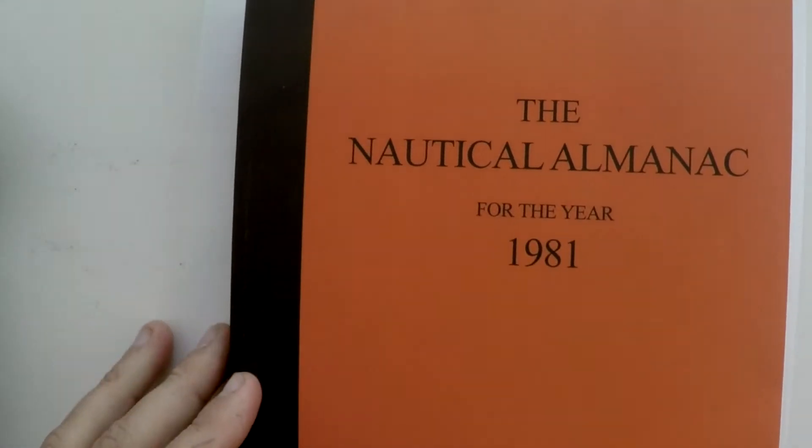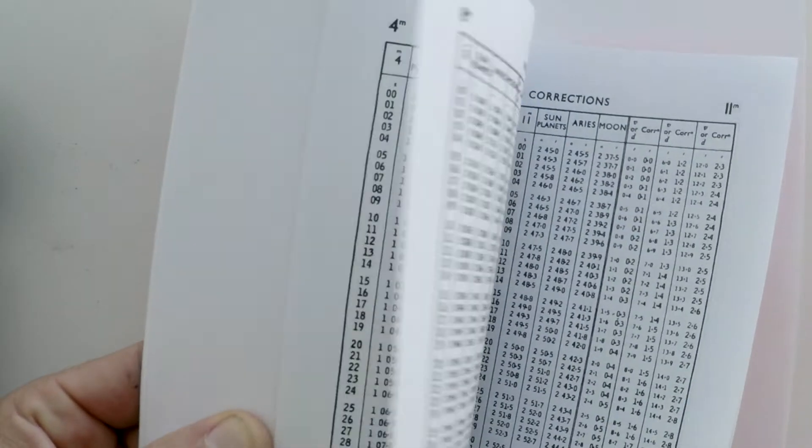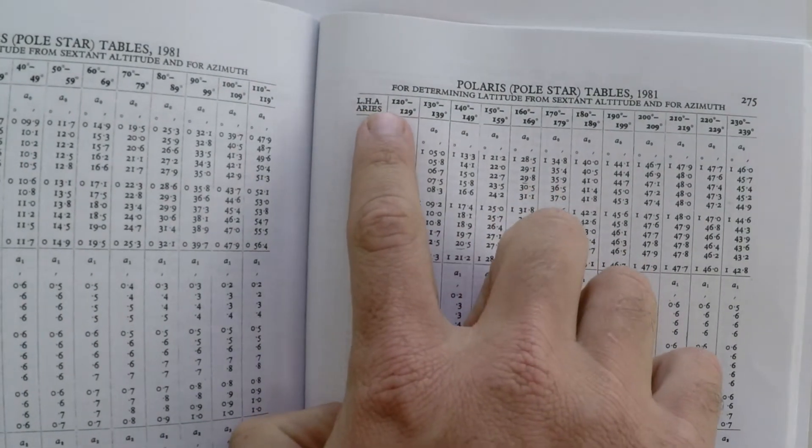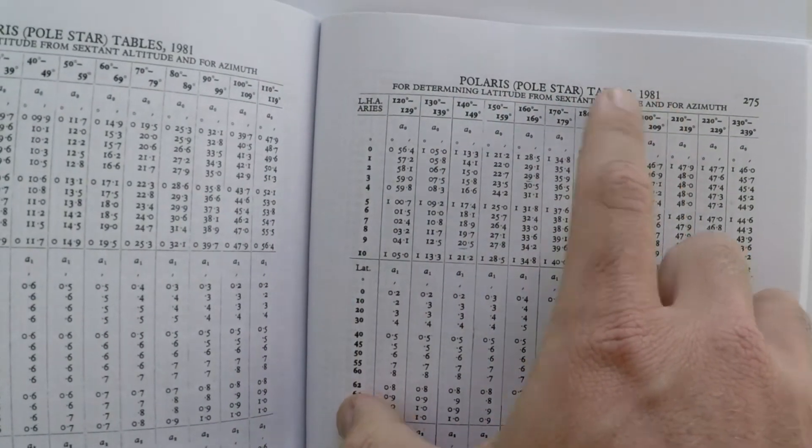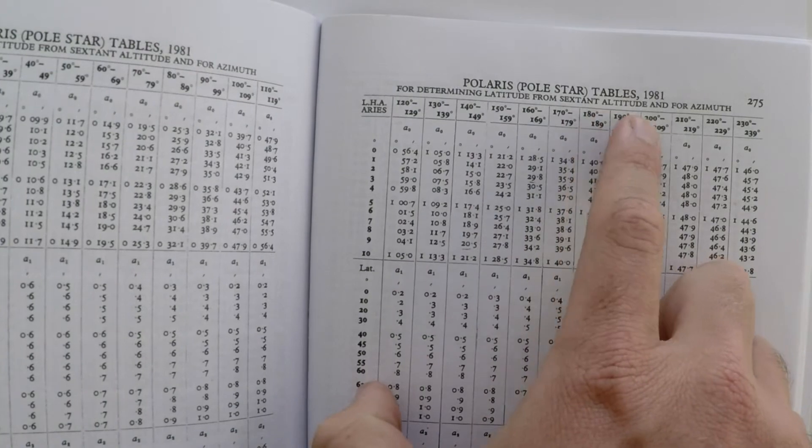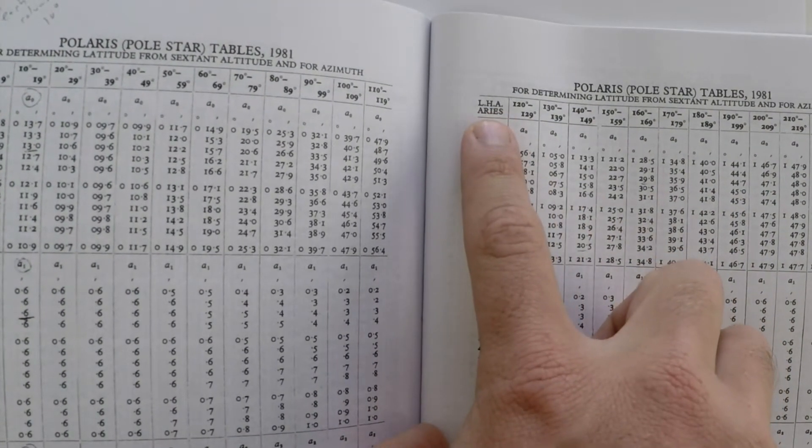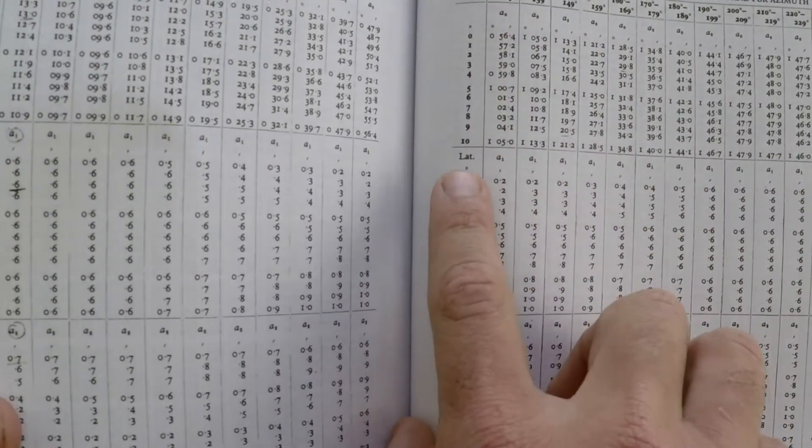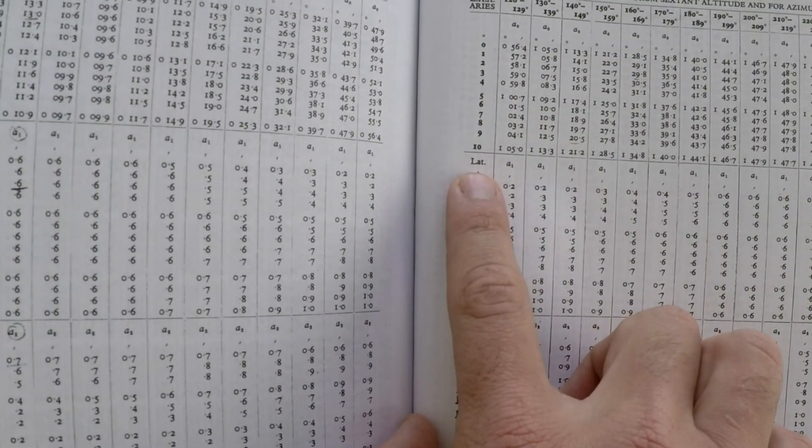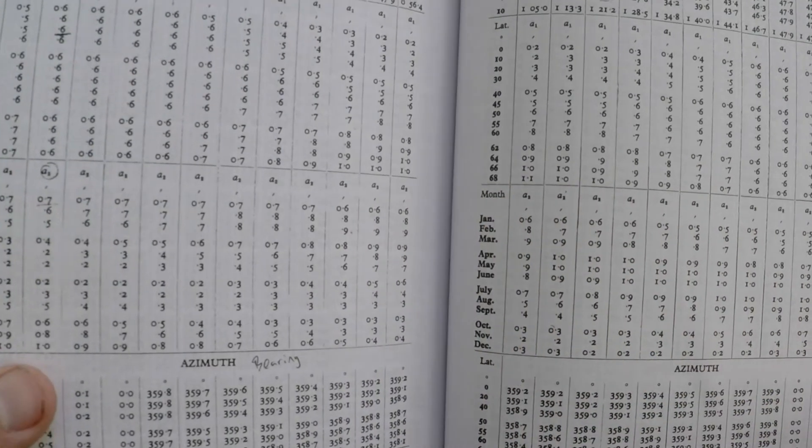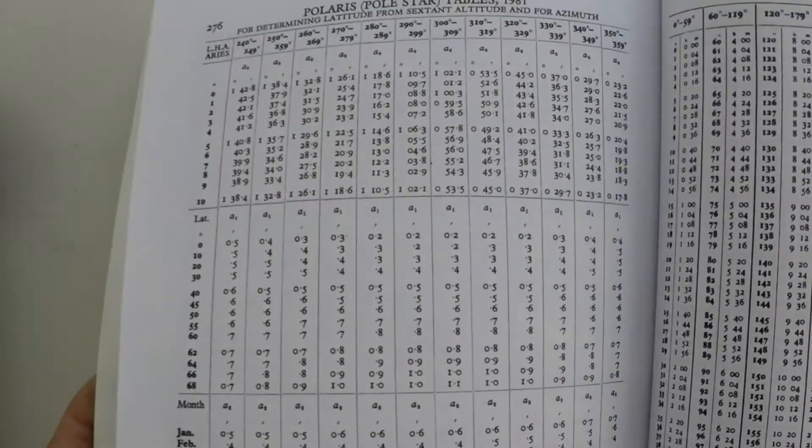To solve these problems we're going to need to use the nautical almanac, and particularly in the back we're going to need to use the Polaris tables. Polaris tables from 1981 for determining latitude from sextant altitude and azimuth. Looking at this table, we can see that we need the LHA of Aries, we need our approximate dead reckoning latitude, and we need the month that we're observing the site in.